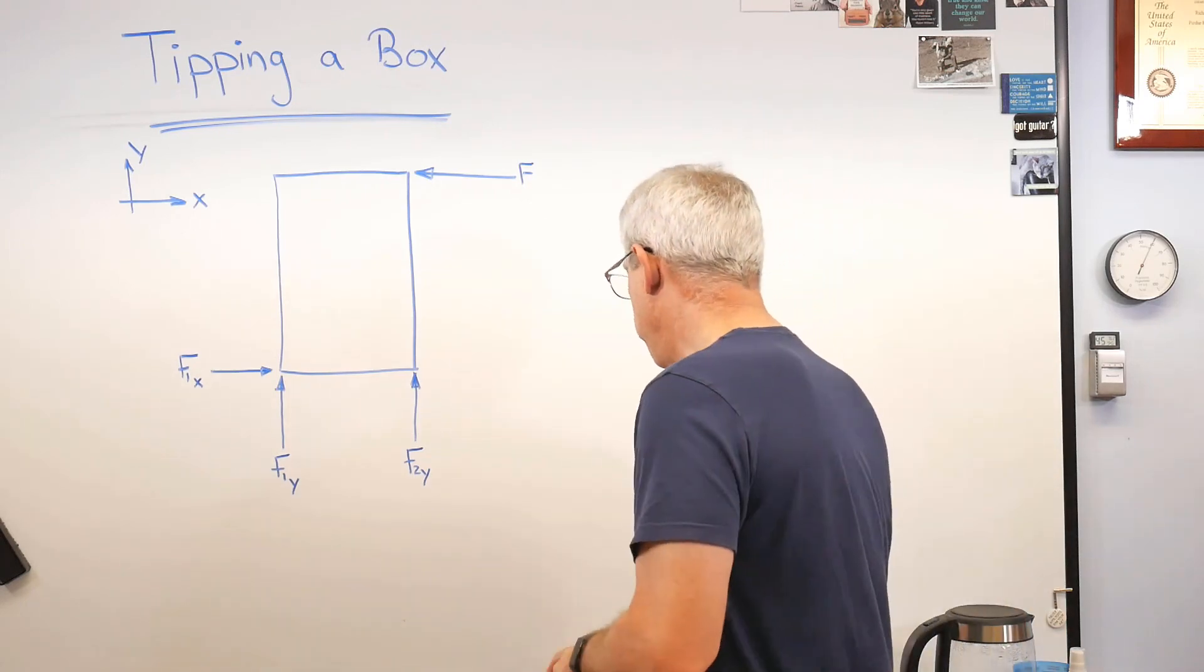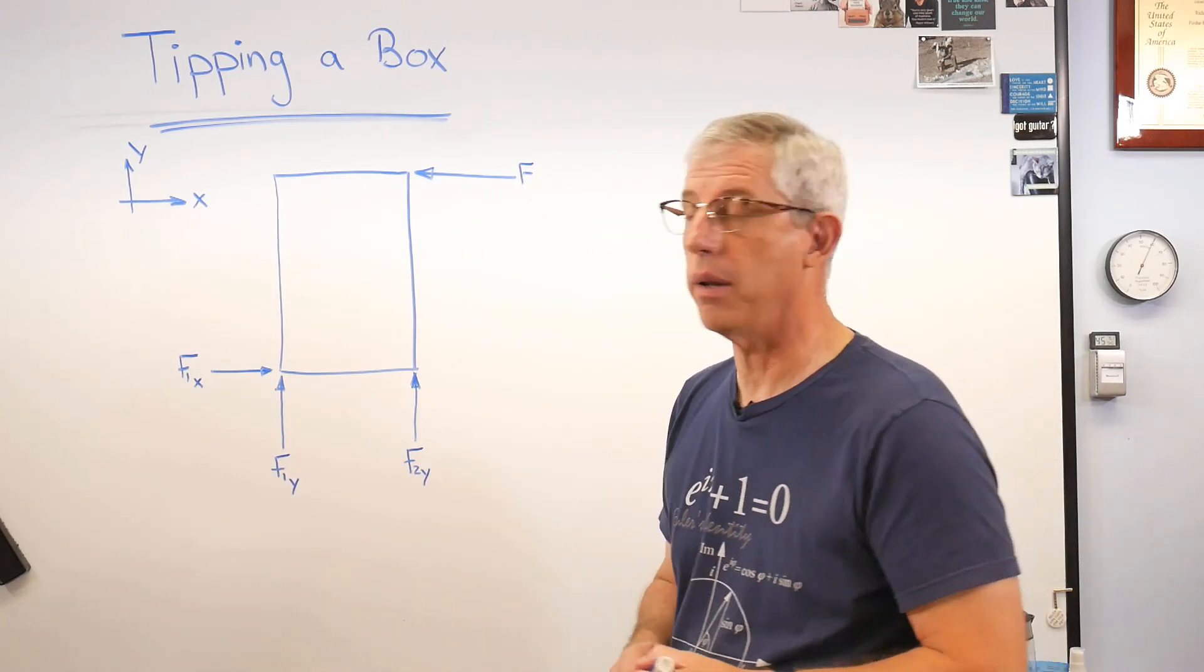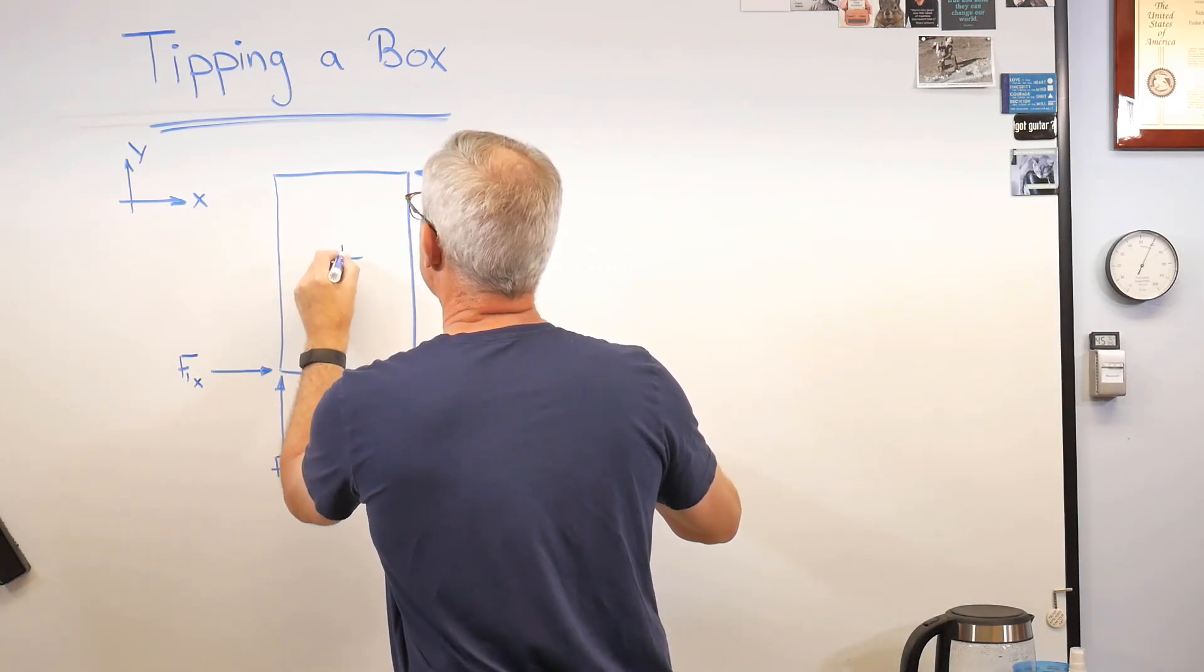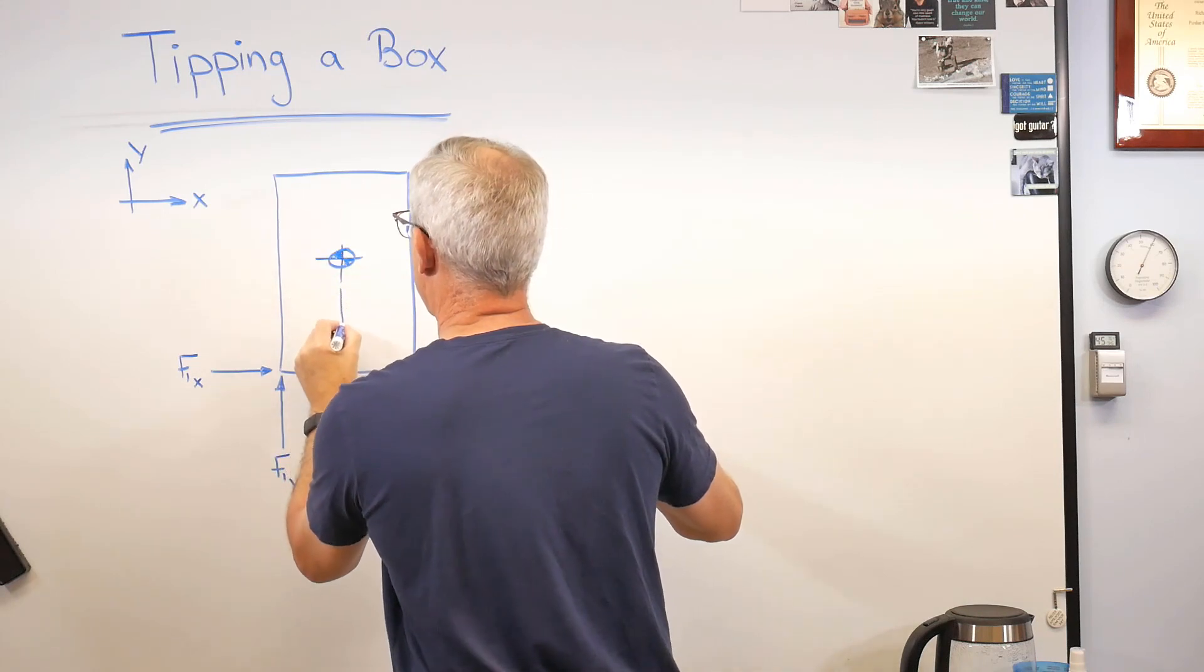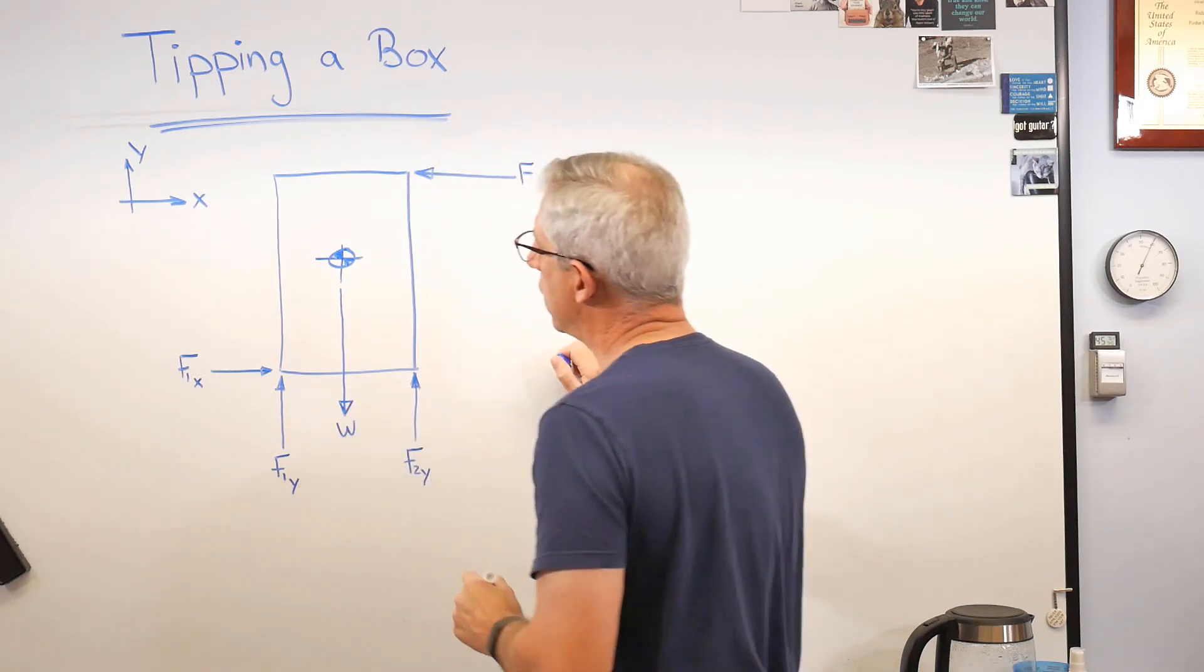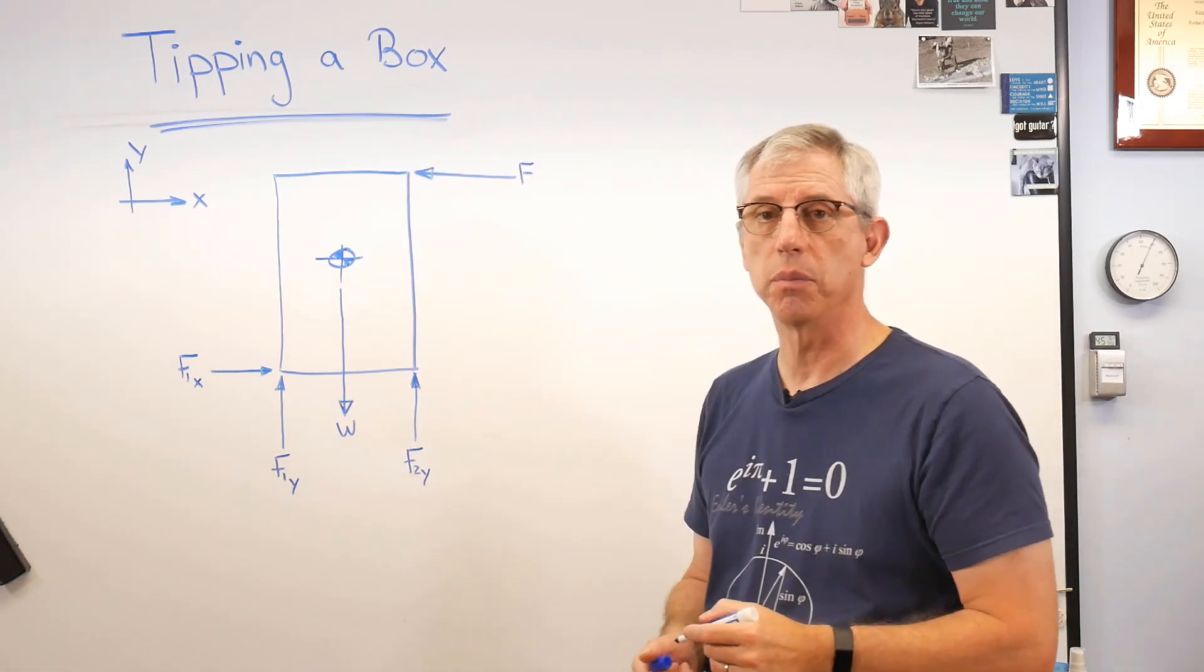So here's a free body diagram. There's a box. Now I'm missing one thing here. Where's the center of gravity? Let's put the center of gravity in the middle. So the box is loaded uniformly, whatever is in it is uniform, and so the center of gravity is right in the middle, and we'll call that the weight. And later I'm going to call that distance there D. This becomes important in a bit.